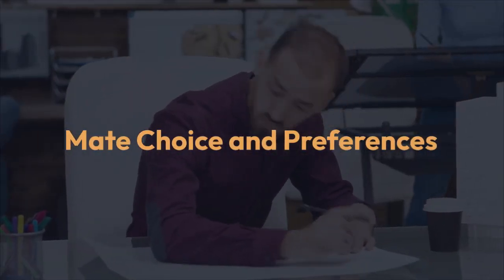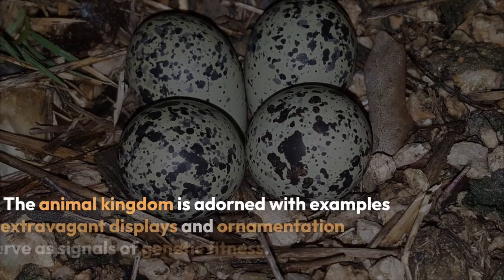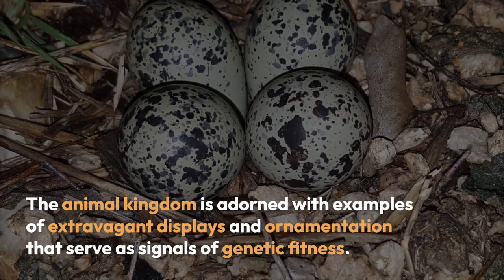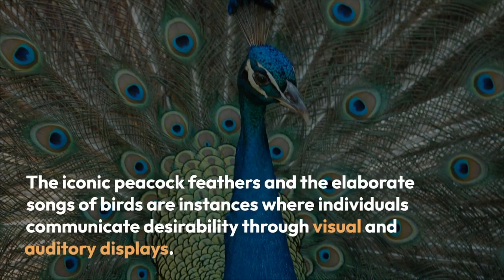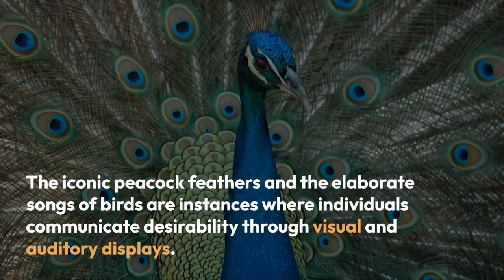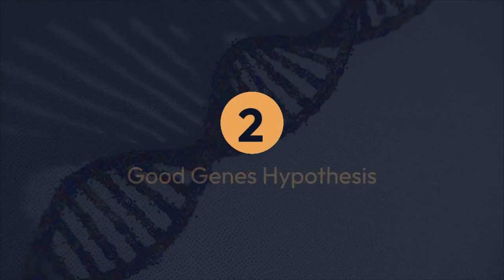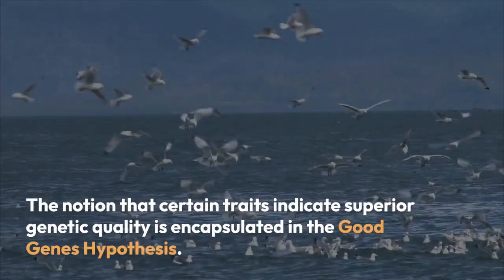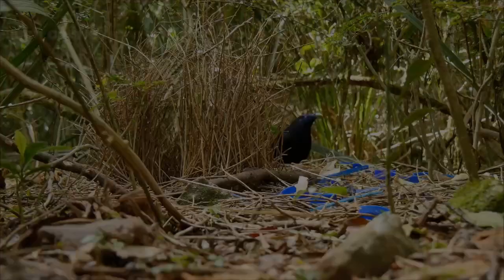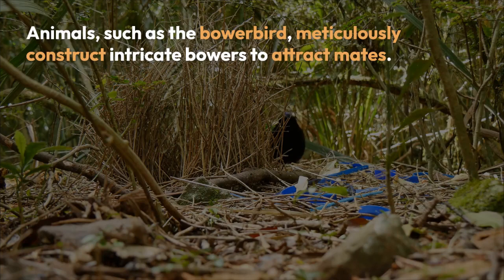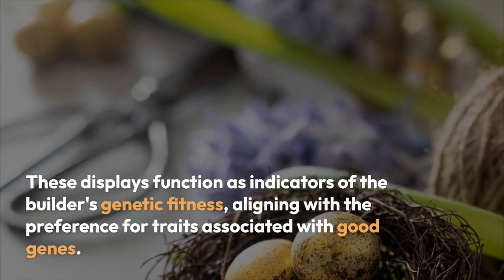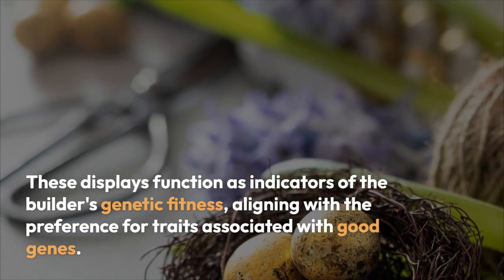Mate Choice and Preferences. Ornamentation and Displays: The animal kingdom is adorned with examples of extravagant displays and ornamentation that serve as signals of genetic fitness. The iconic peacock feathers and the elaborate songs of birds are instances where individuals communicate desirability through visual and auditory displays. The Good Genes Hypothesis encapsulates the notion that certain traits indicate superior genetic quality. Animals such as the Bower Bird meticulously construct intricate bowers to attract mates, functioning as indicators of the builder's genetic fitness.